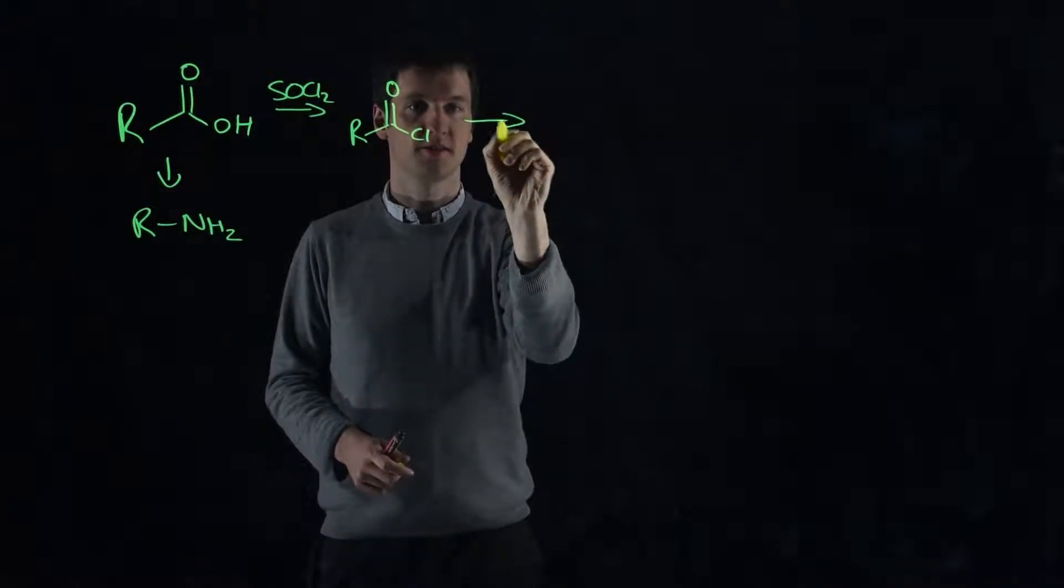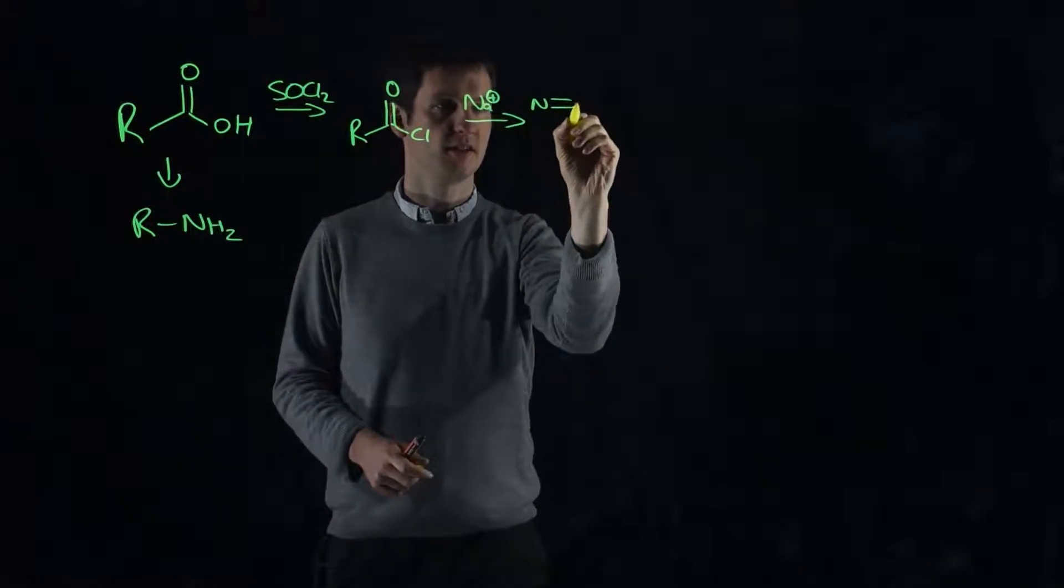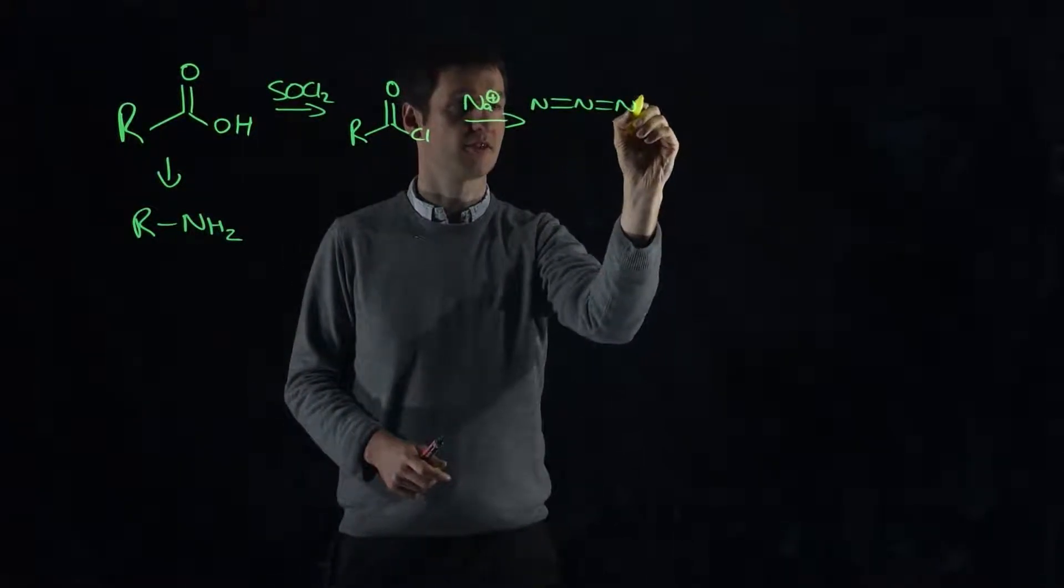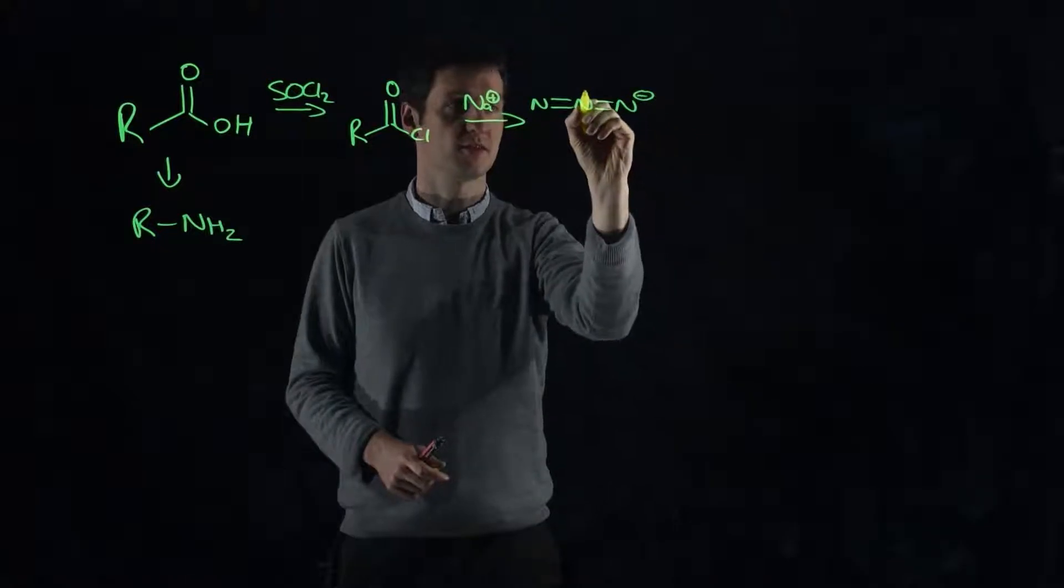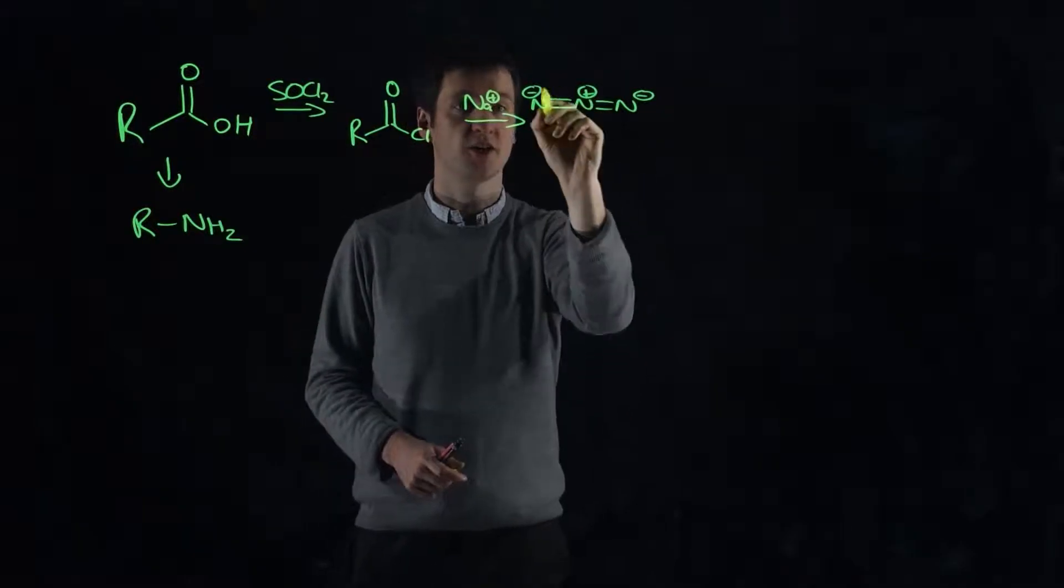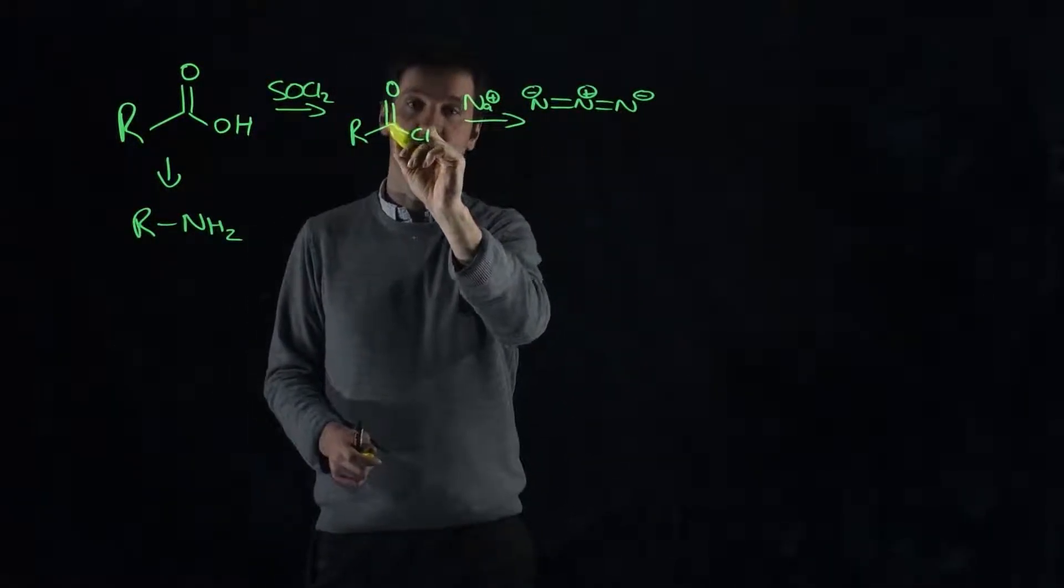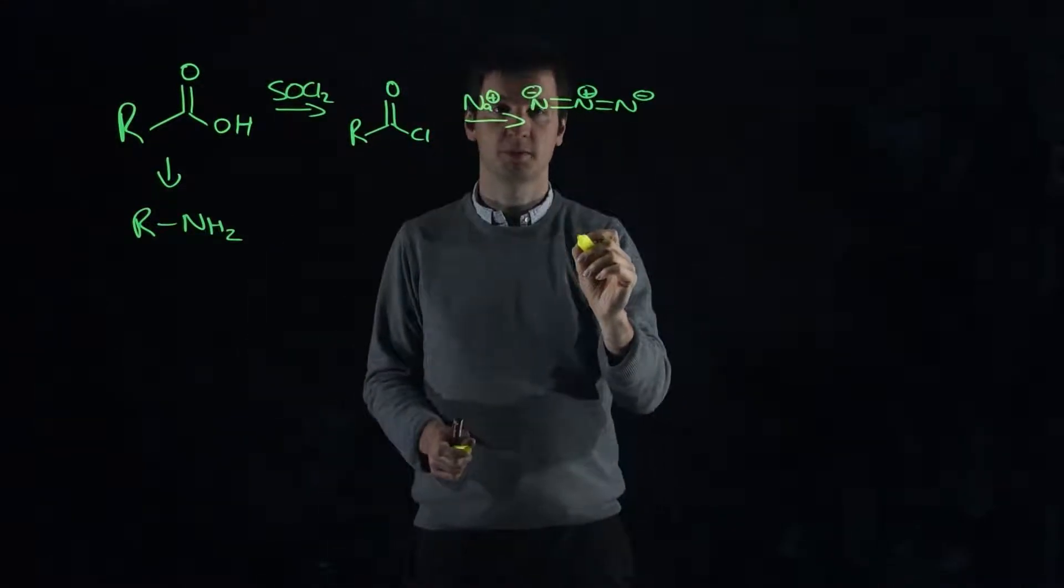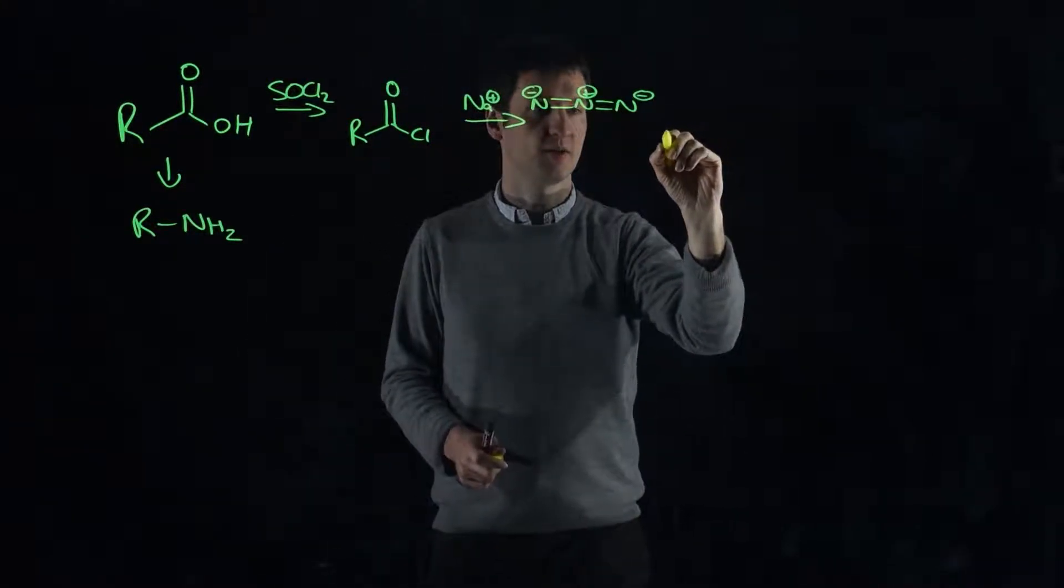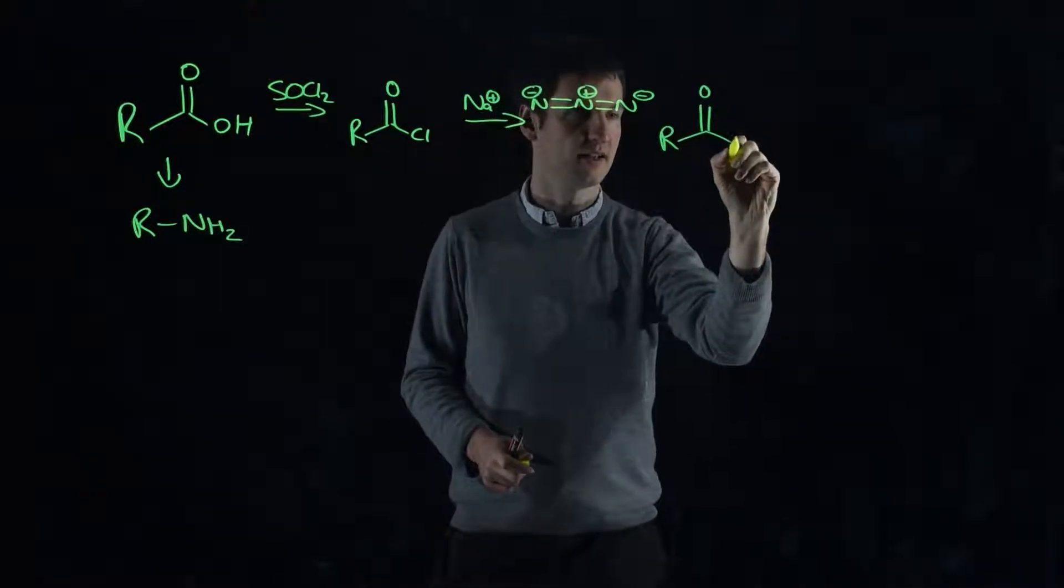Then if we treat our acid chloride with sodium azide (N3-), azide is a really good nucleophile - it's perfectly linear so it's not sterically hindered in any way and it's got a net negative charge. This can attack and displace the chloride in a classic tetrahedral intermediate, collapse, reform your carbon-oxygen double bond, and at the end what we end up with is an acyl azide.